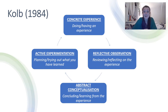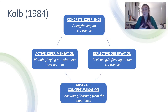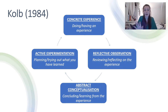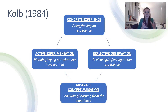Then we've got abstract conceptualization — which sounds super fancy but all it means is concluding or learning from the experience. That's just making plans and working out which bits of your reflections you can take forward. The fourth stage is active experimentation — again, it just means planning and trying out what you've learned. What can you bring forward? What are you going to actively do next time you're in a similar situation?